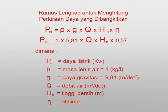To calculate the generated power, the water density is multiplied by gravity force, multiplied by water flow, multiplied by height, and multiplied by the efficiency of the turbine.